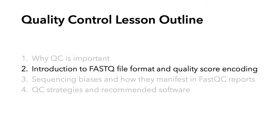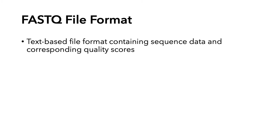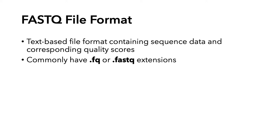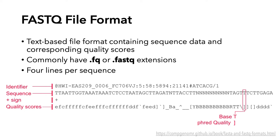Now, an introduction to the FASTQ file format and quality score encoding. Quality scores are stored together with nucleotide sequence data in a standard FASTQ file format. You cannot escape FASTQ files if you're even dipping your toes into omics research. FASTQ files are text-based files that contain sequence data and corresponding quality code scores. They commonly have .FQ or .FASTQ extensions, and they have four lines per sequence.